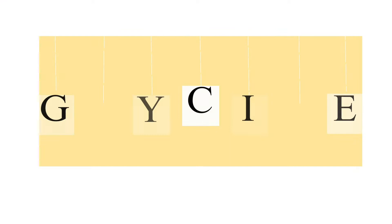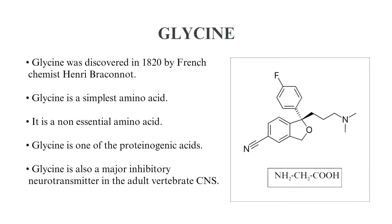In today's video we are going to discuss about glycine. Glycine was discovered in 1820 by French chemist Henri Brackenot. Glycine is the simplest amino acid and a non-essential amino acid. It is one of the proteinogenic amino acids, and also a major inhibitory neurotransmitter in the adult vertebrate central nervous system.